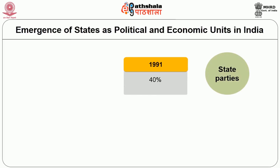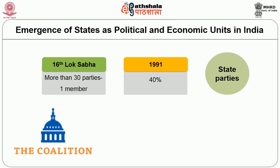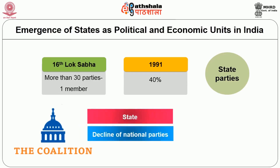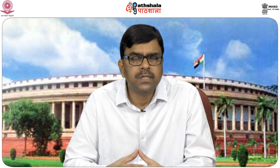Even now in the 16th Lok Sabha, more than 30 parties have at least one member. The emergence of state parties in almost all states, and also the emergence of coalition governments at the center and state level, with the decline of national parties — and BJP trying to spread its presence all over India — has led to the increased importance of the state, because when the importance of state parties increases, the importance of the state also increases in political terms.